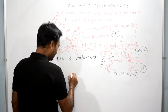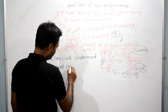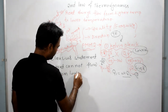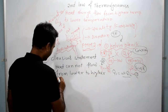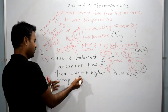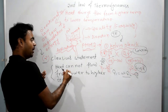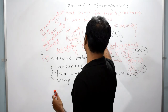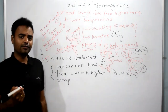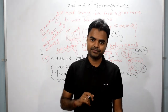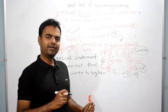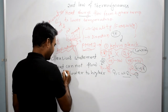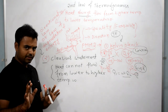The Clausius statement says: heat cannot flow from lower temperature to higher temperature on its own. In other words, heat always flows from higher to lower temperature naturally. You might ask — what about a refrigerator or heat pump where heat flows from cold to hot? The answer is that this is possible, but only with an external effort. Without any external effort, heat cannot flow from lower to higher temperature.